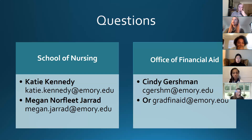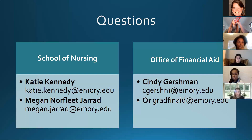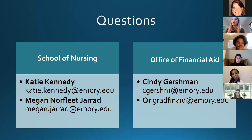When do Grad PLUS loans typically disperse? All financial aid disperses about three to five business days prior to the first day of class. Regarding housing: graduate student housing is all off campus, covered under your cost of attendance and funded through Graduate PLUS loans. The deposit payment is $500, and if you submit your deposit today or previously submitted it, you'll be entered in a raffle to win a $1,000 scholarship. The deposit is also paid through your OPUS account.